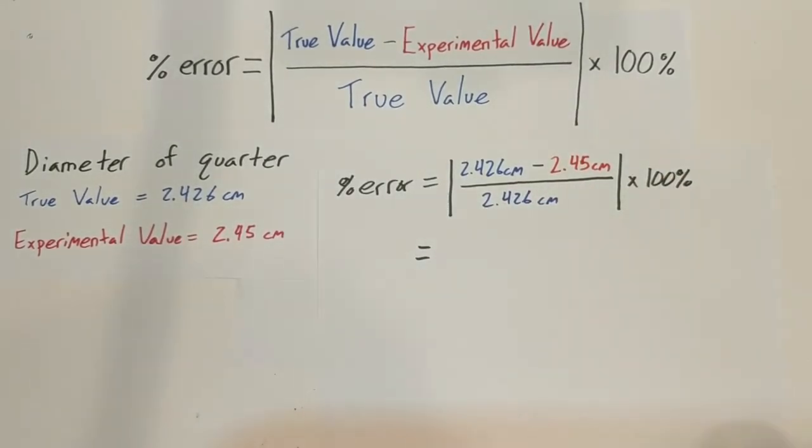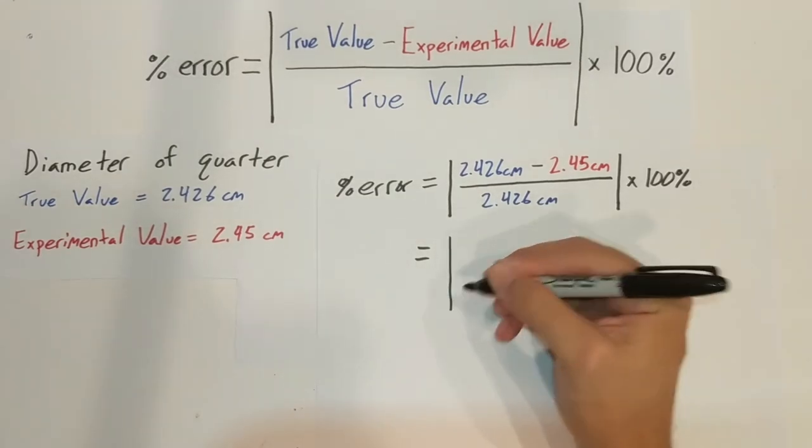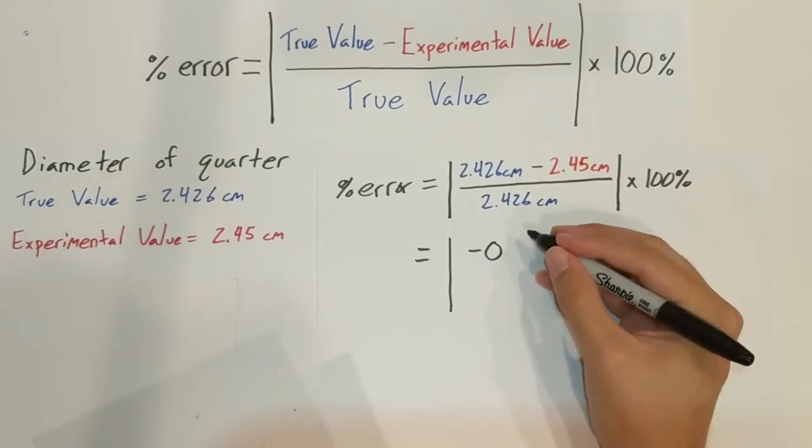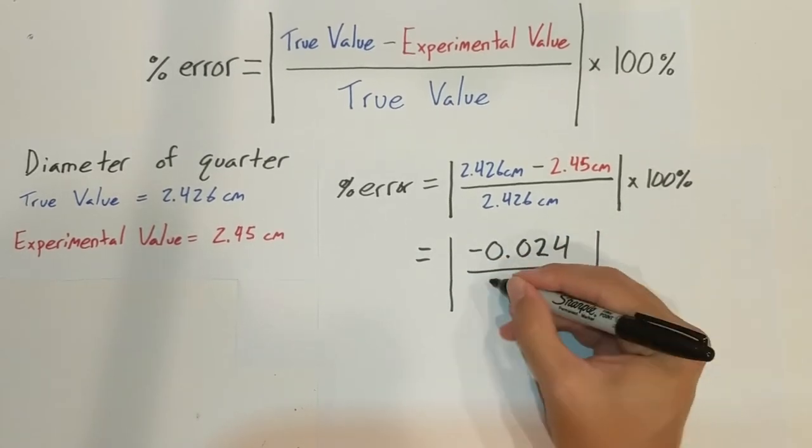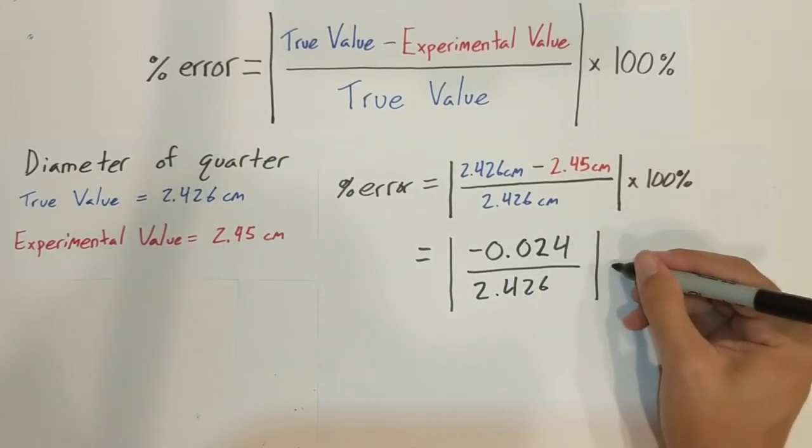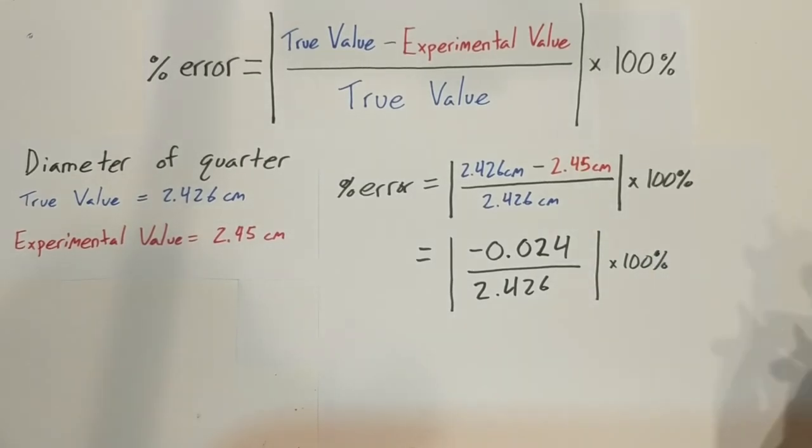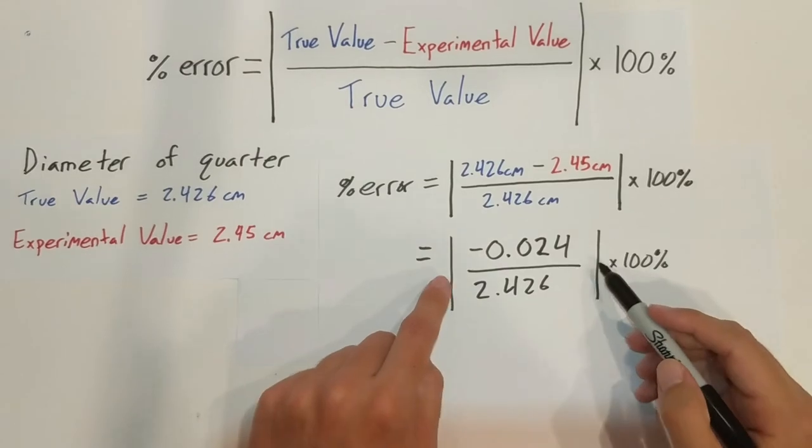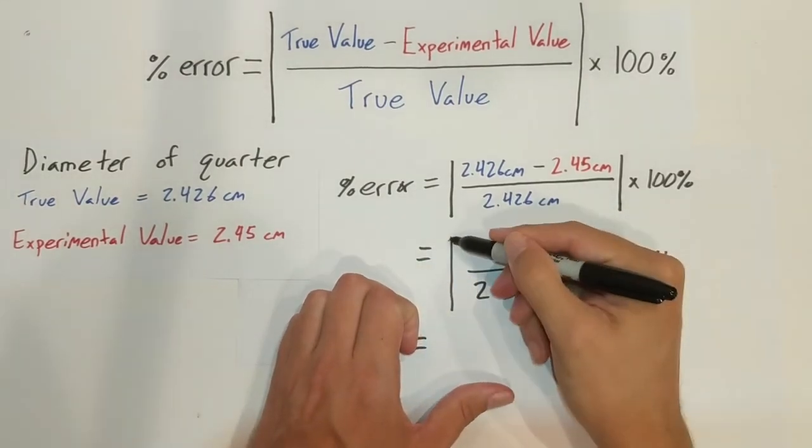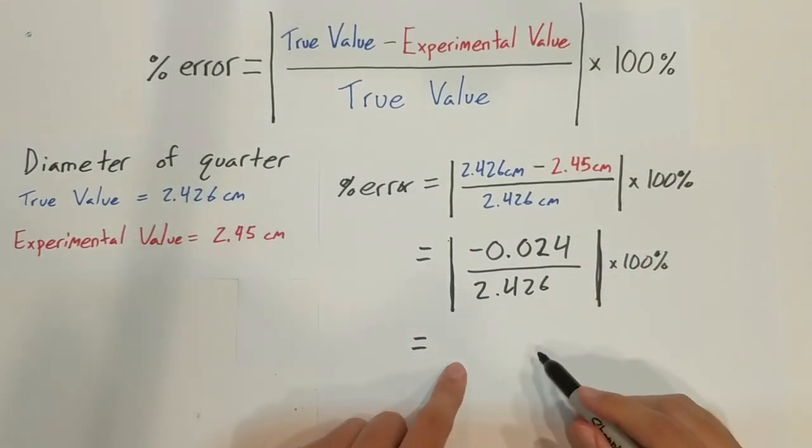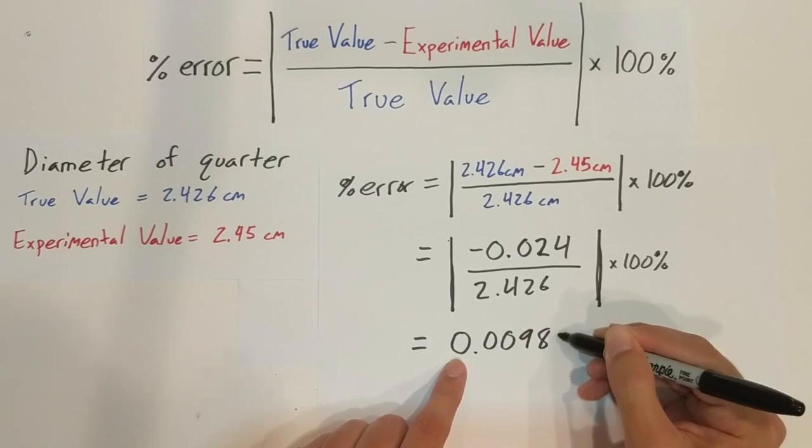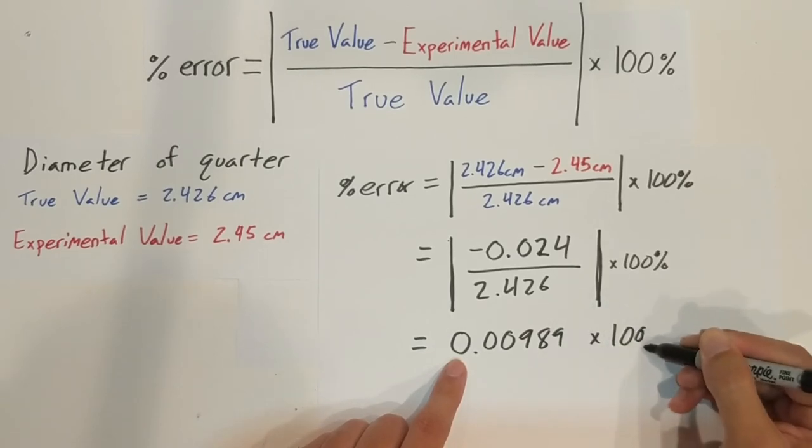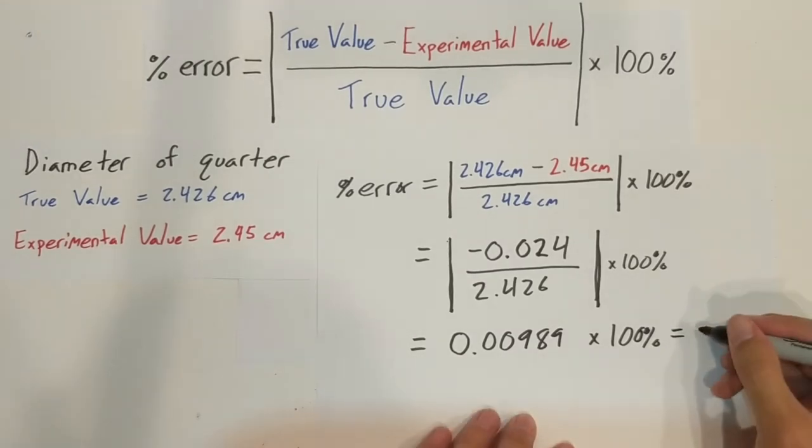So we're going to just do the math now. You can plug it into a calculator, and we'll get negative 0.024 divided by 2.426 times a hundred percent. And then remember, we'll stick this in a calculator, and our absolute value means that we're going to get a positive number here. So we'll get 0.00989 times that hundred percent, and our answer is just going to be 0.990 percent error.